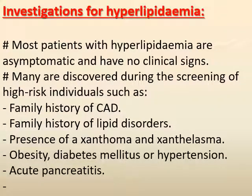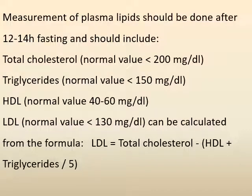Investigations for hyperlipidemia: most patients are asymptomatic and discovered during screening for high-risk individuals, such as those with family history of coronary artery disease or lipid disorders, presence of xanthoma and xanthelasma, obesity, diabetes, hypertension, and acute pancreatitis. Measurement of plasma lipids should be done after 12–14 hour fasting and should include total cholesterol, with normal value below 200 mg/dL; triglycerides, with normal value below 150 mg/dL; HDL ranging from 40–60 mg/dL; and LDL with normal value below 130 mg/dL.